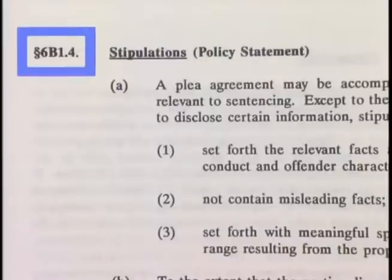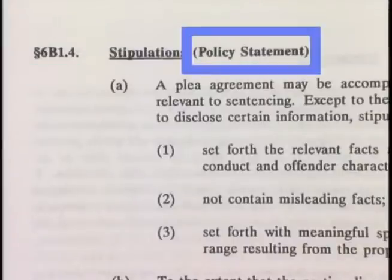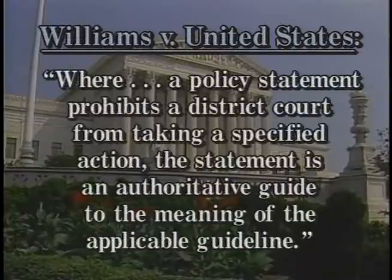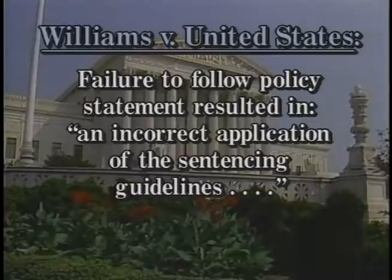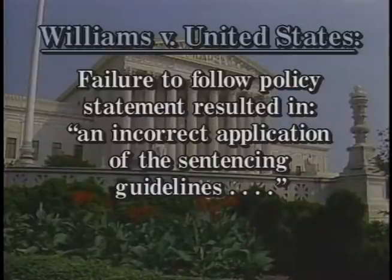The Sentencing Reform Act also directs the Commission to issue policy statements. Numbered like guidelines but specifically designated as policy statements, these provide guidance on the application of the guidelines and the appropriate use of statutory sanctions. The Act directs the court to consider any pertinent policy statement issued by the Commission in imposing sentence. In Williams v. United States, the Supreme Court held that where a policy statement prohibits a district court from taking a specified action, the statement is an authoritative guide to the meaning of the applicable guideline. The court also held in Williams that failure to follow such a policy statement resulted in an incorrect application of the sentencing guidelines that should be set aside on appeal unless the error was harmless.